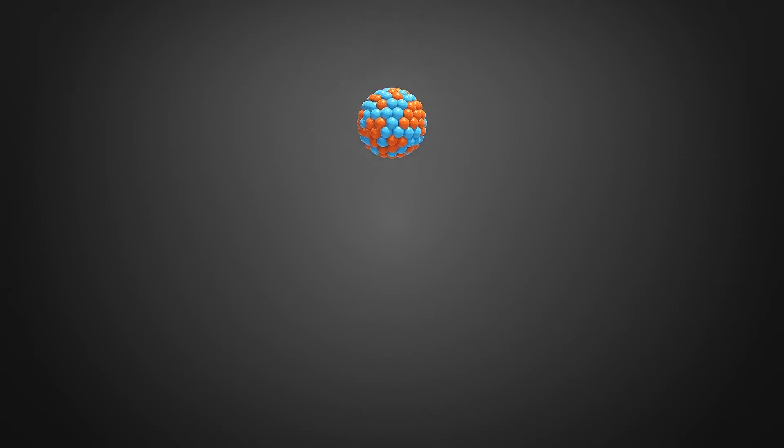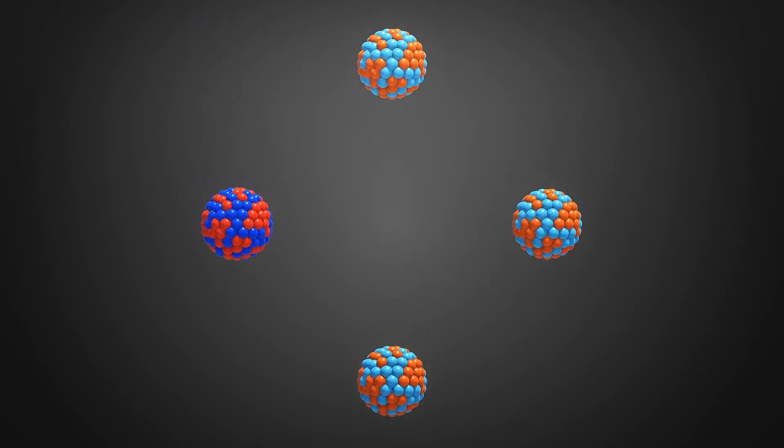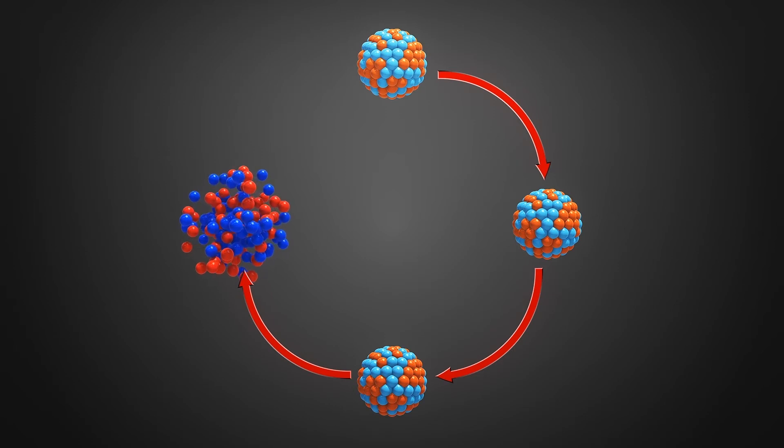The use of thorium as the fuel is considered greener than the use of uranium because it does not create plutonium, which is highly toxic, and because its radioactivity drops off to safe levels in a few hundred rather than tens of thousands of years, according to NPR.